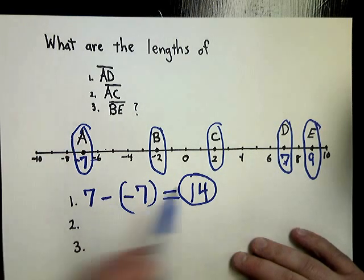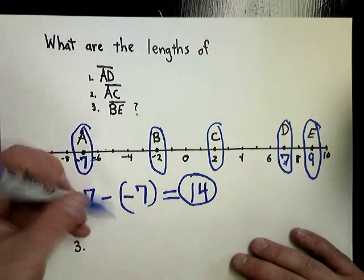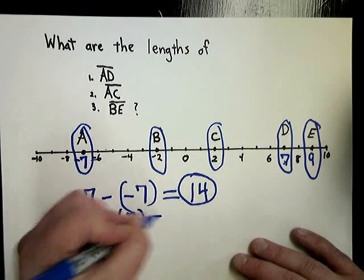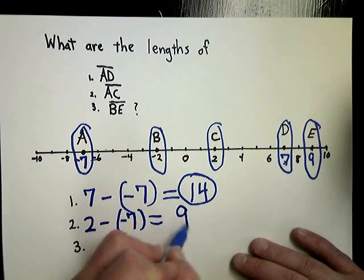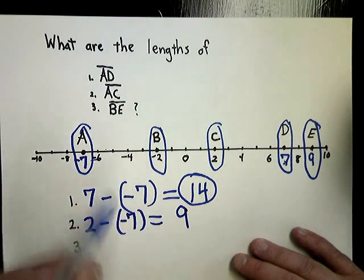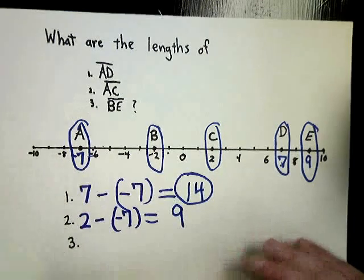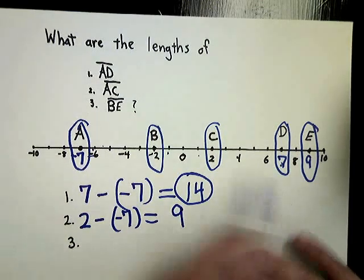For AC, I would do two minus negative seven. And that should give me nine, or two plus seven, which is nine. And I can count that up one, two, three, four, five, six, seven, eight, nine. See, ruler postulate is easy.